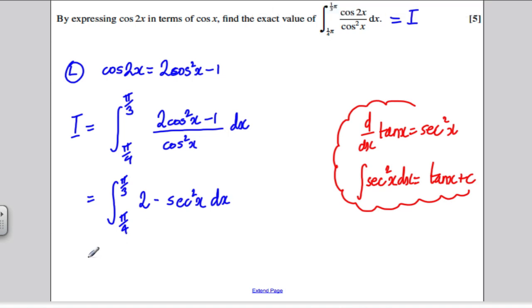So let's integrate everything. The integral of 2 with respect to x is 2x. The integral of sec squared with respect to x is tan x, so this would be minus tan x, and you evaluate that between your limits of pi by 3 and pi over 4.